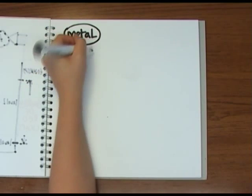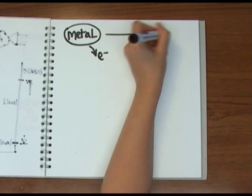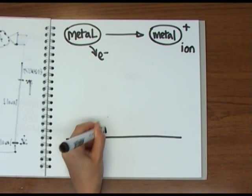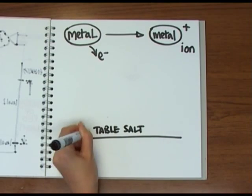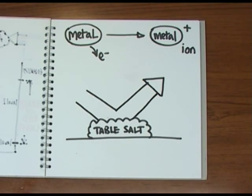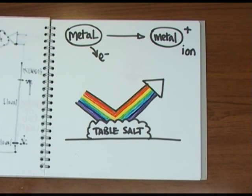When a metal forms a compound, the metal atoms lose electrons and become ions. This changes the energy levels for the electrons so that they don't correspond to the energies of any colors of visible light, so most metal compounds, like sodium chloride or table salt, won't absorb visible light and so look colorless.